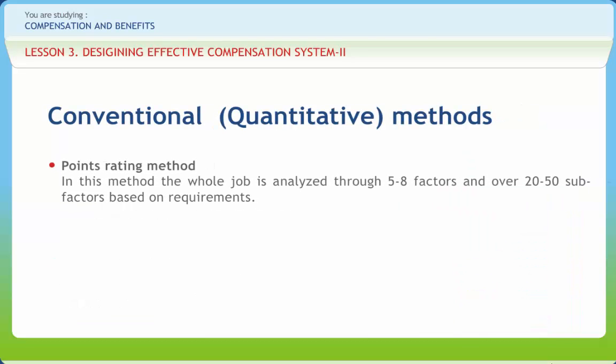In the points rating method, the whole job is analyzed through 5 to 8 factors and over 20 to 50 sub-factors based on requirements. These factors or sub-factors are given points which total out as the overall position of the jobs. Though it is not scientific, it is a systematic method. This method involves job analysis through interview or questionnaire and actual observations, writing the job description from data collected through job analysis and checking them up with department supervisors concerned for accuracy, and development of an appropriate plan which involves selection and definition of factors and giving due weightage to them, deciding on the number of degrees and defining them and assigning point values to degrees.